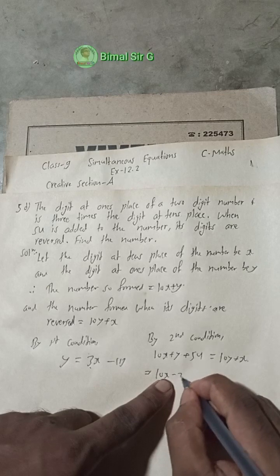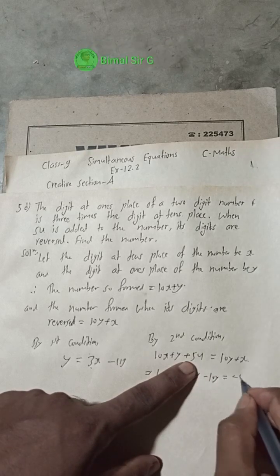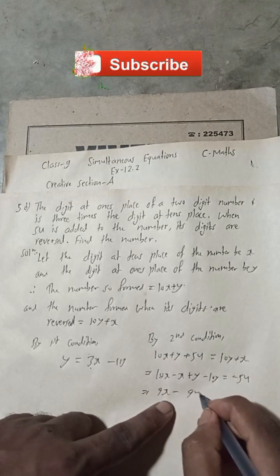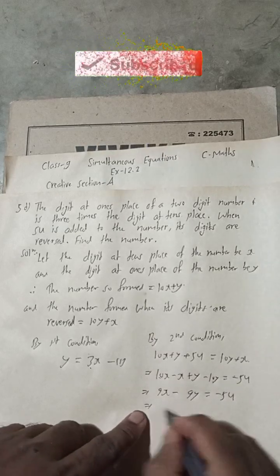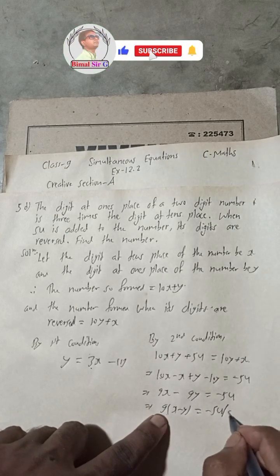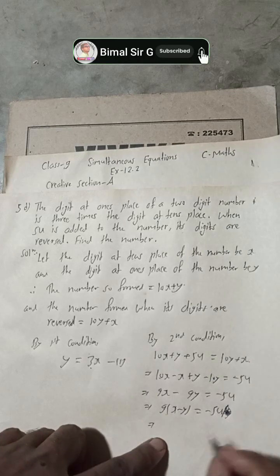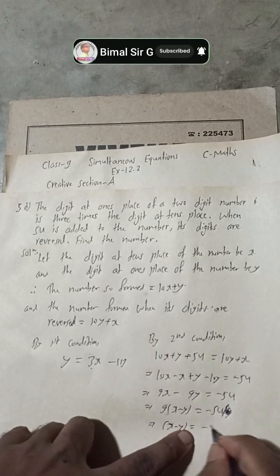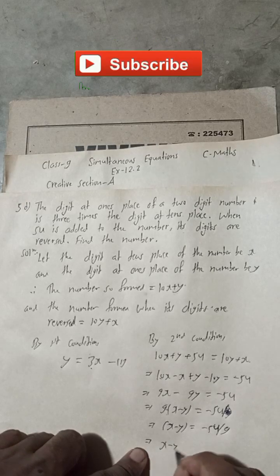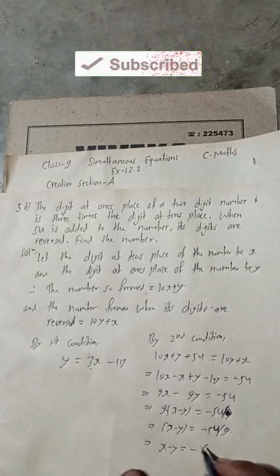Rearranging: 10x plus y plus 54 equals 10y plus x. Bringing like terms together: 10x minus x plus y minus 10y equals minus 54, giving 9x minus 9y equals minus 54. Taking 9 as common: x minus y equals minus 6. This is our equation 2.